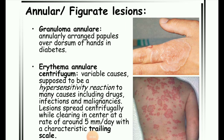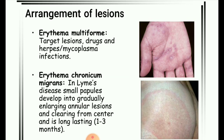Next image: Annular figurate lesions. Granuloma annulare shows annularly arranged papules over the dorsum of hands, associated with diabetes. Erythema annulare centrifugum has variable causes — a hypersensitivity reaction to drugs, infections, and malignancies. Lesions spread centrifugally while clearing in the center at approximately five millimeters per day, with a characteristic trailing scale.